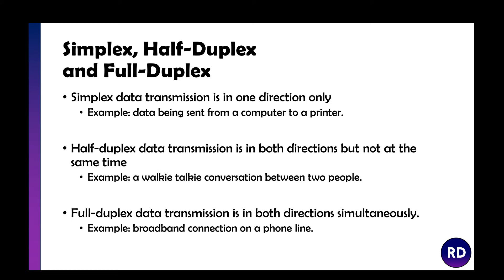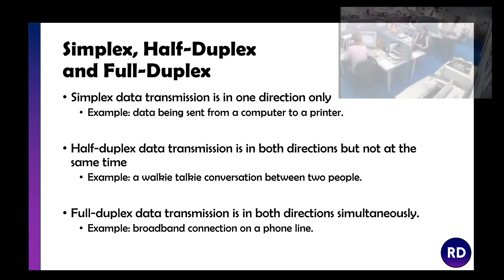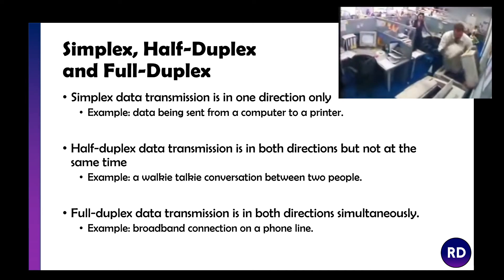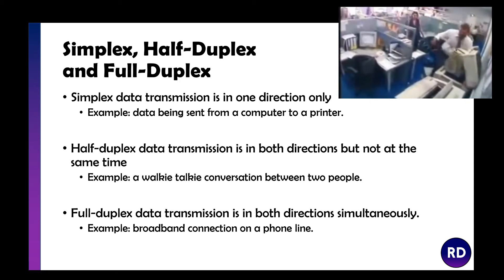The types of transmission we have are simplex, half duplex, and full duplex. Simplex data transmission is just in one direction. For example, sending a document to the printer would use simplex because we're not receiving data back from the printer — we're just sending things to get printed.